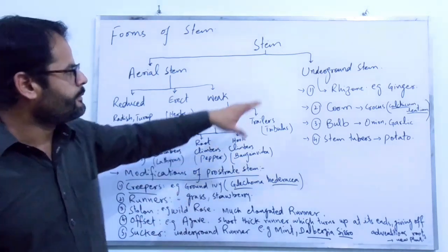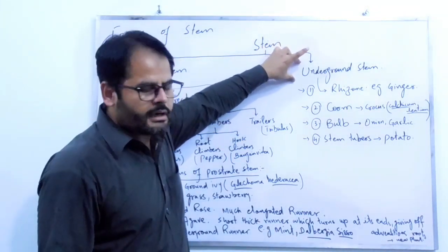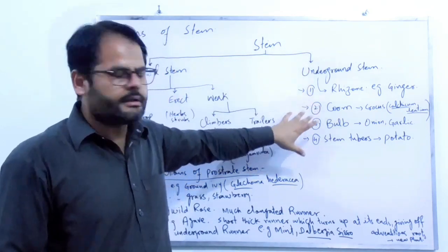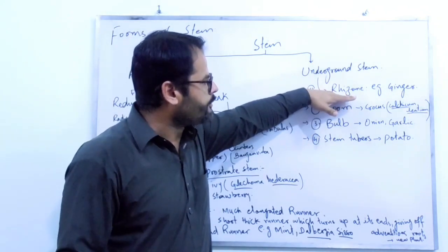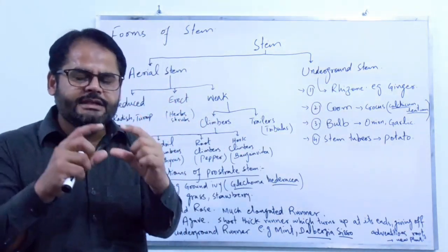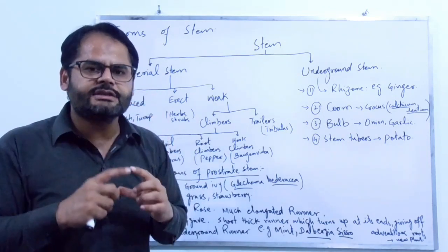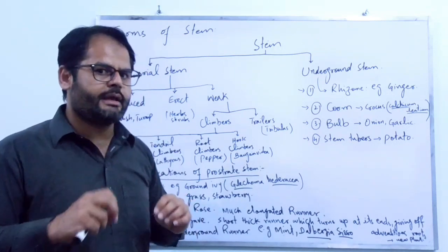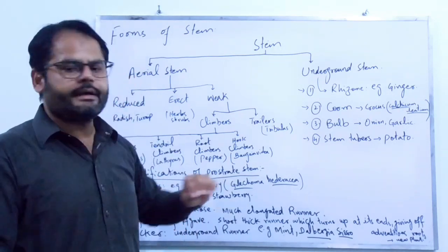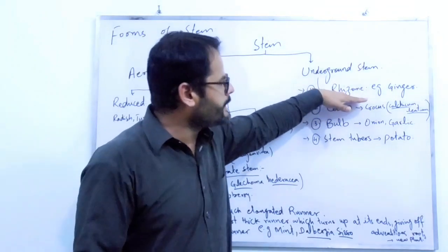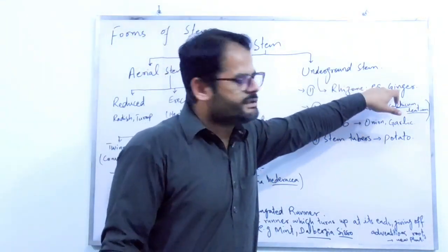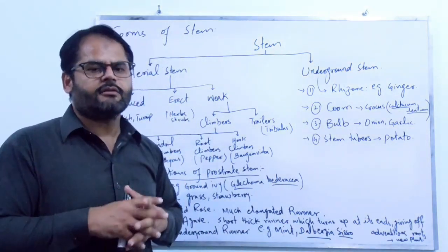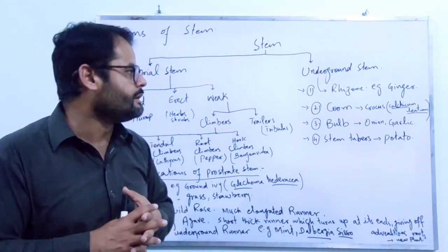We also have underground stem, which is divided into four main categories. The first one is called rhizome. The rhizome is a thick, fleshy, branched stem which grows horizontally under the soil and has nodes and internodes. The familiar example of rhizome is ginger, and it is also found in some sedges, for example Typha angustifolia.